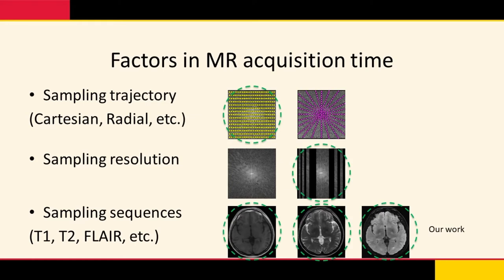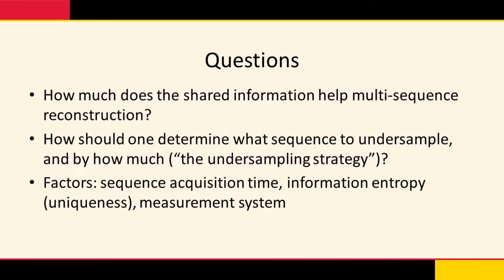In our work, we are interested in the scenario where multiple sequences need to be taken in one session. This provides an advantage where we can exploit the highly correlated information across different sequences, assuming they are taken in one scanning session and that the patient maintains a relatively stable position so that the pixels are relatively aligned. Under this scenario, we want to answer: how much does sharing information help multi-sequence reconstruction, and what is the best undersampling strategy, while accounting for factors like different acquisition time for different sequences?